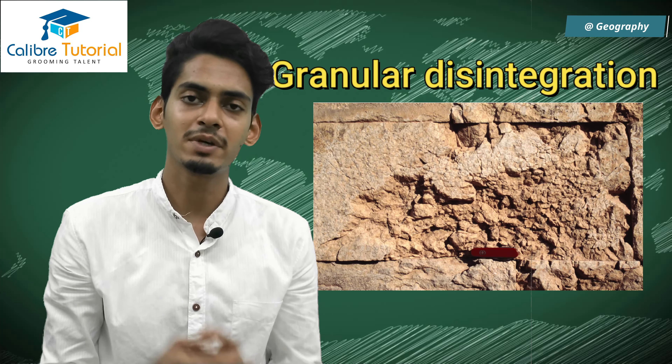Now we have two parts of exogenetic forces: weathering and erosion. Basically, weathering is the disintegration and breaking down of rock without movement. Erosion is the disintegration and breaking down of rock with movement. For example, a piece of rock falls directly from a mountain without any movement — that is weathering.